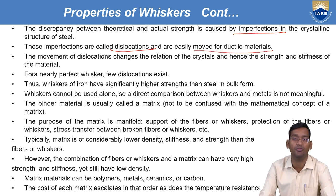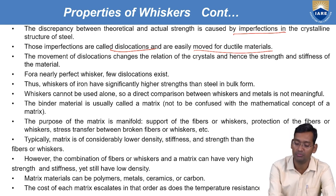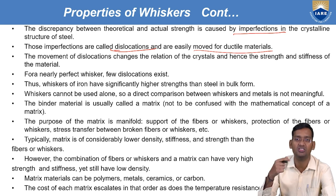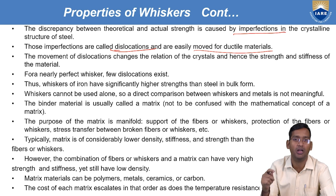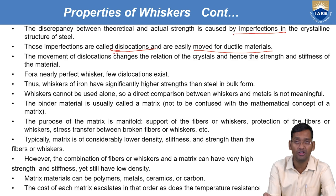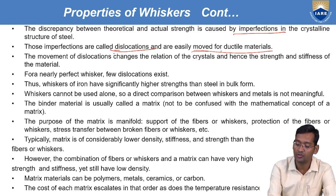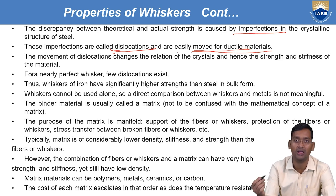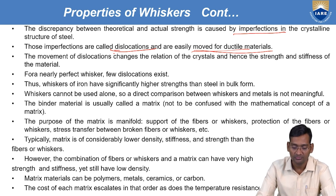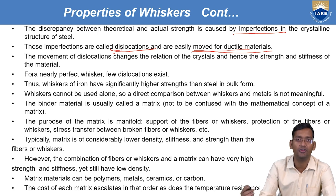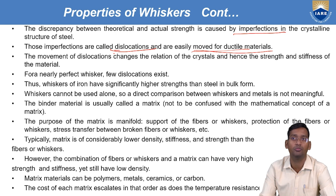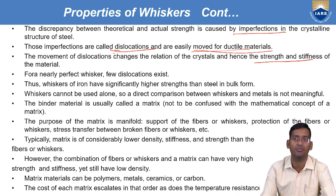If dislocation will be more, that becomes brittle material — you can see this imperfection even if you take a chalk and break it: small holes are visible, and because of that only you can break it by hand. In case of ductile material, dislocation should not be there — as much as they will be perfect, that means they will have the ductile property. If dislocation is lesser, they will have more strength and stiffness; if dislocation is more, they will have lesser strength and lesser stiffness.